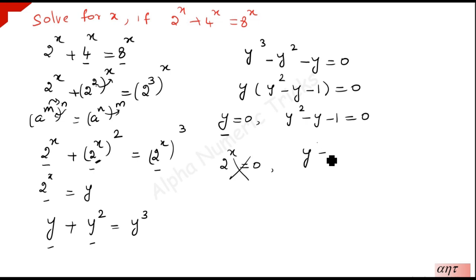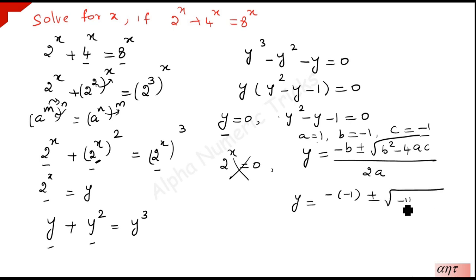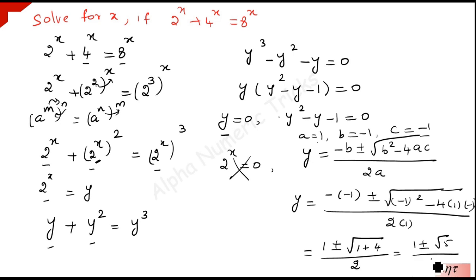This is a quadratic equation, so we apply the formula: x equals minus b plus or minus square root of (b squared minus 4ac), divided by 2a. Here a equals 1, b equals minus 1, and c equals minus 1. Substituting: we get 1 plus or minus square root of (1 plus 4), all divided by 2, which gives 1 plus or minus root 5 over 2.